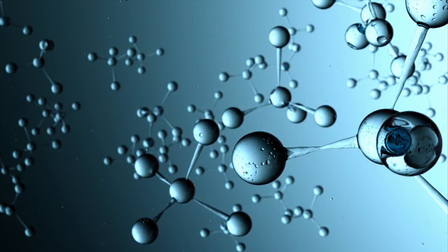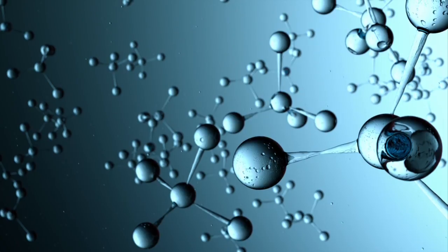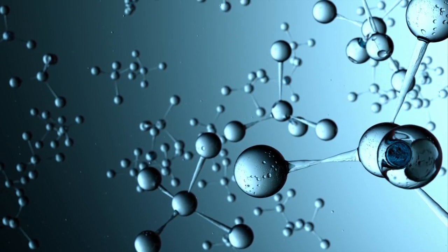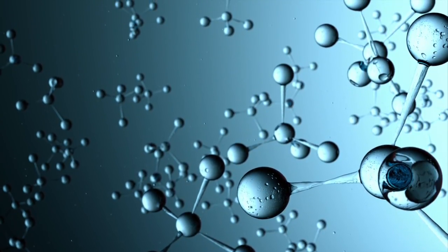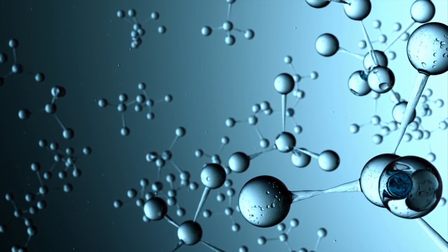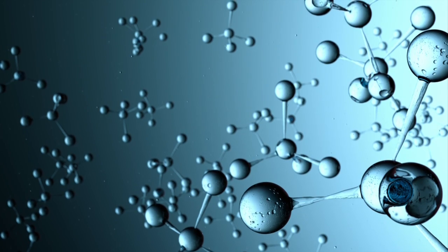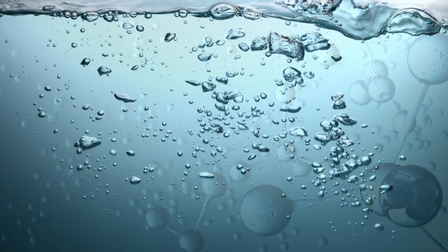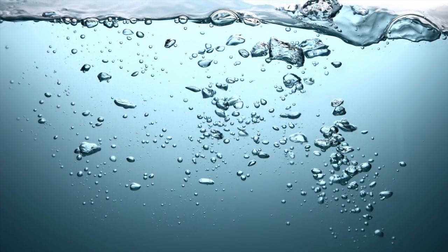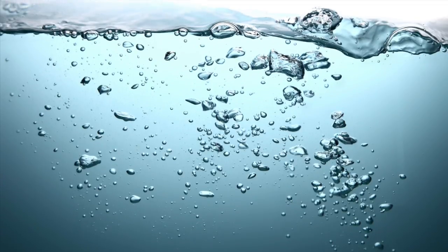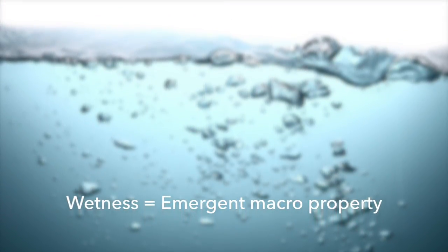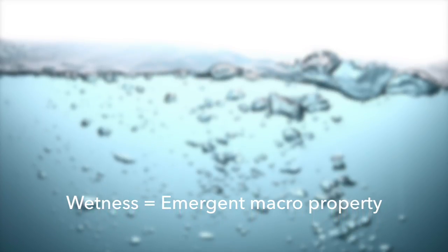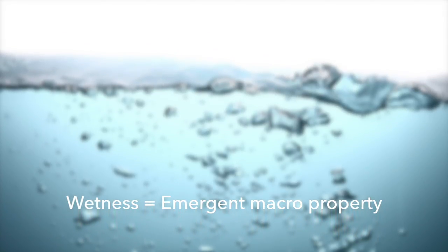There are many examples of this, but maybe the simplest is the example of water. Water is made up of hydrogen and oxygen atoms. Neither of these two elements that make up the system have the property or quality of wetness, but when we combine them, we get a substance called water that has the quality of being wet. This property of wetness has emerged out of the interaction of the system's elements and it only exists on the system's level.